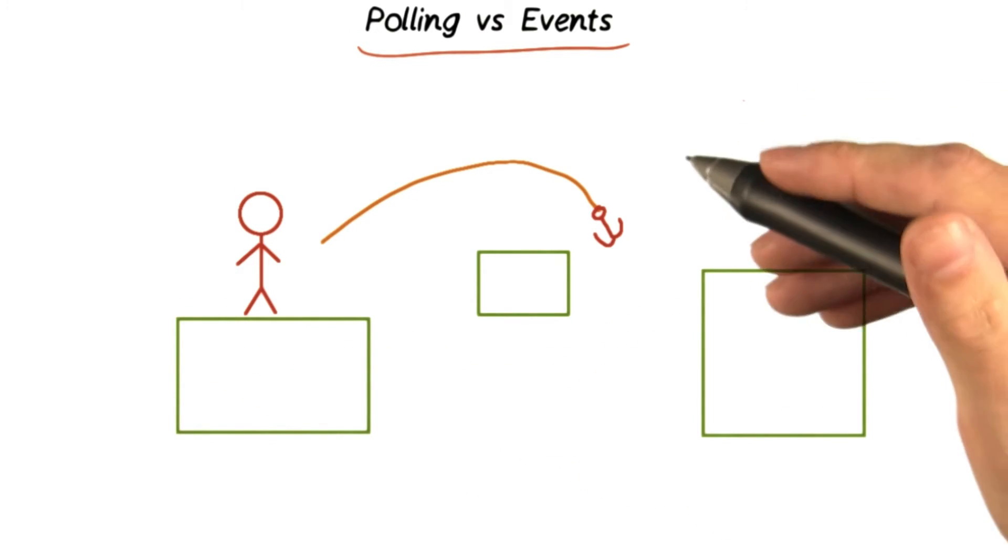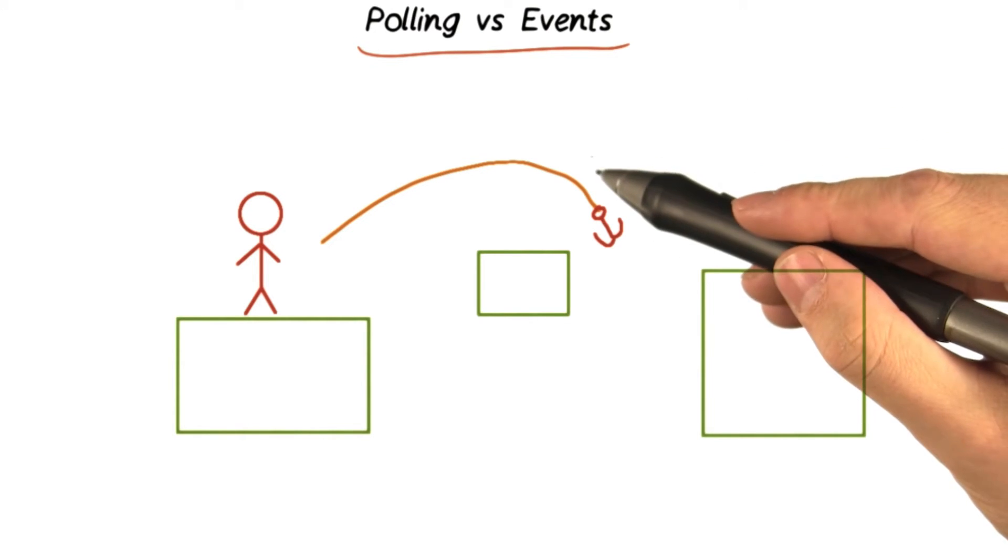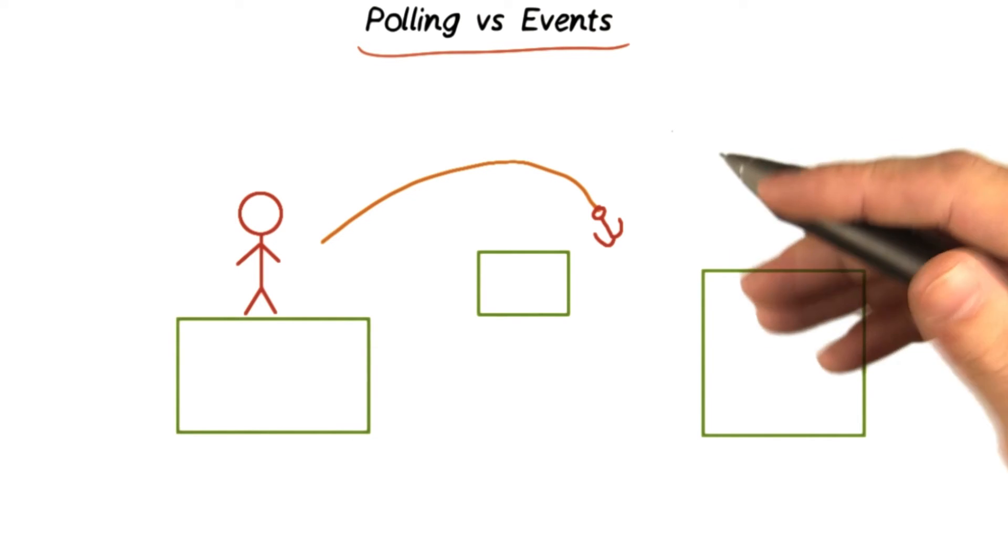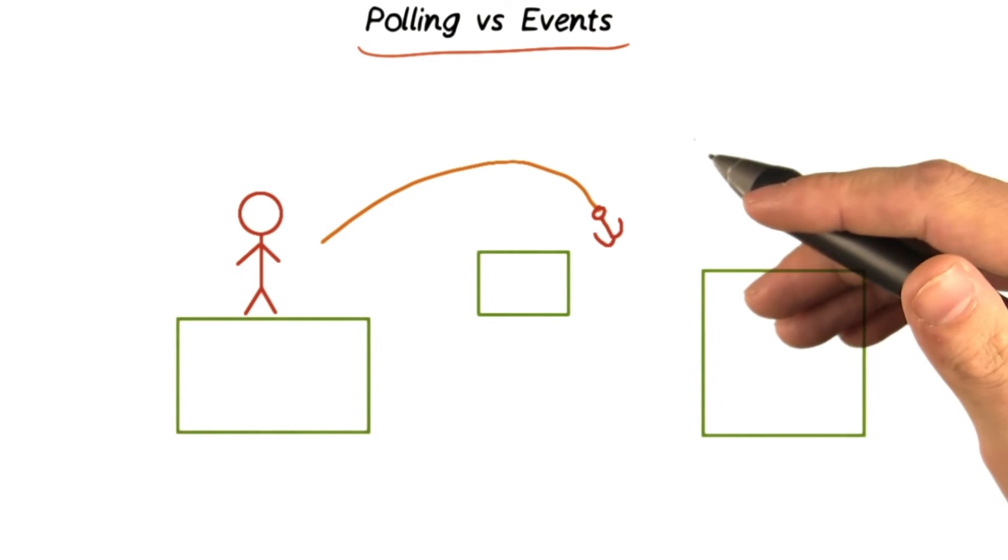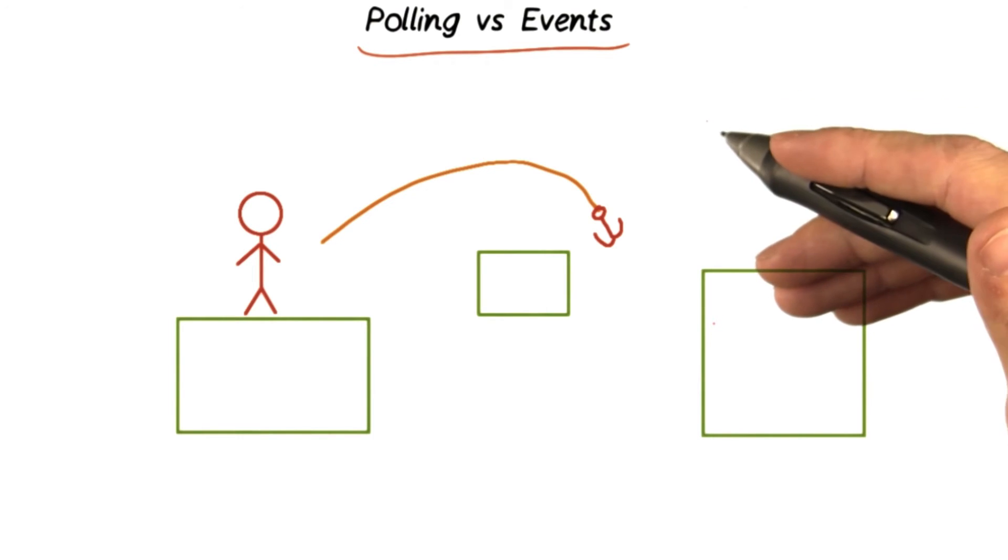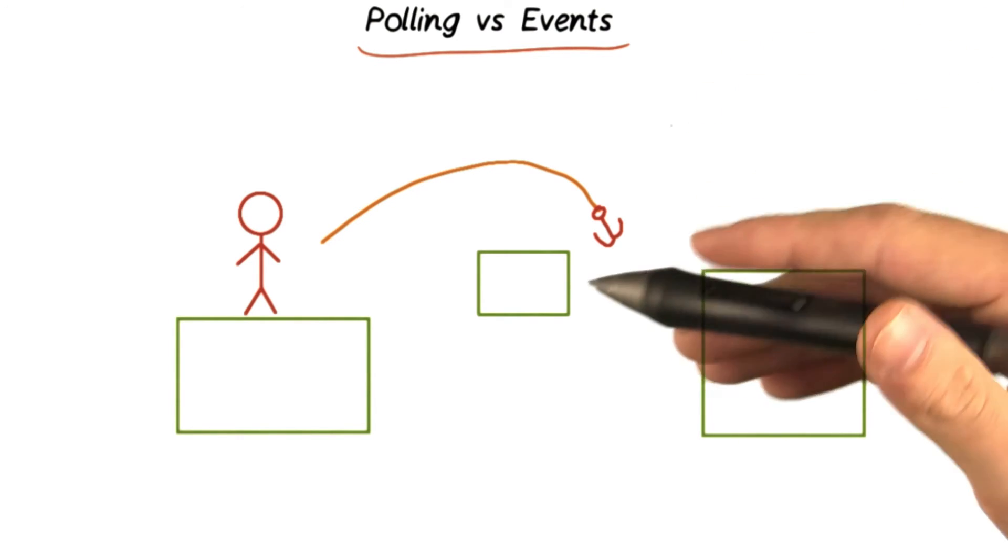On the other hand, say you want the character to fire a grappling hook when the spacebar is pressed. In this case, you don't actually want to check the state of the spacebar every frame. You're only interested in the moment the key is pressed. If the user holds down the spacebar, you don't care.